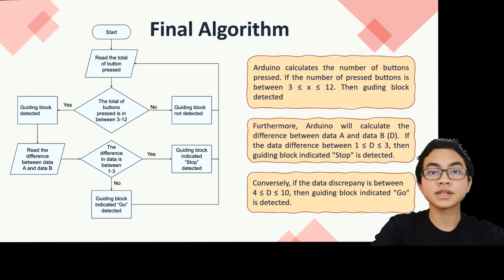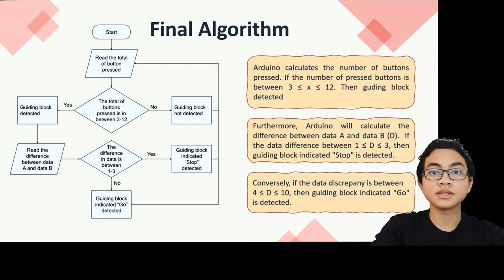When the program starts, the first thing it does is read the total button press. If the total button press is between 3 and 12, the user is stepping on a guiding block; otherwise, the user is not on a guiding block. If the user is on a guiding block and the difference between data A and data B is between 1 and 3, the guiding block indicating stop is detected. Conversely, if the difference between data A and data B is between 4 and 10, the guiding block with a go indication is detected.